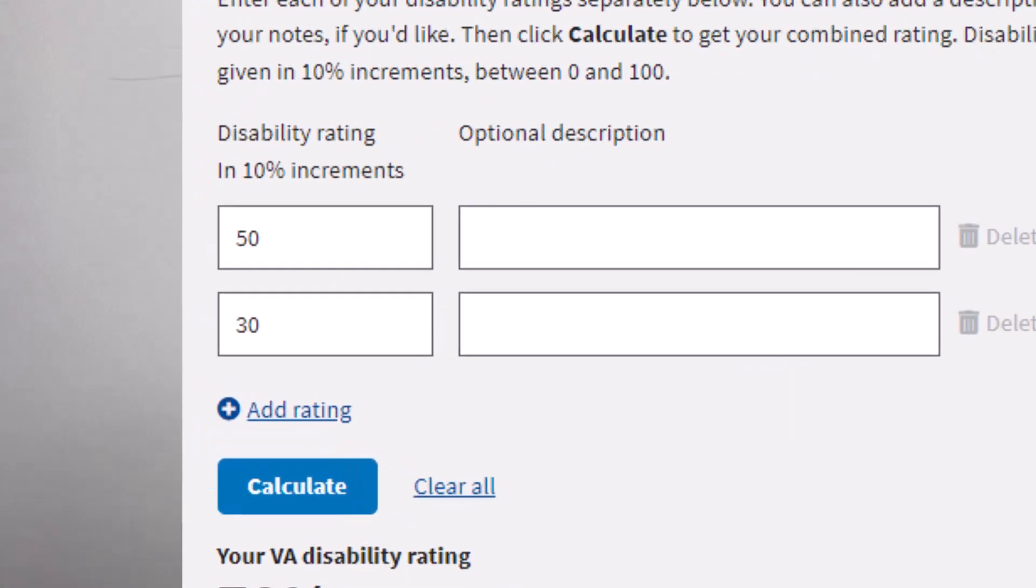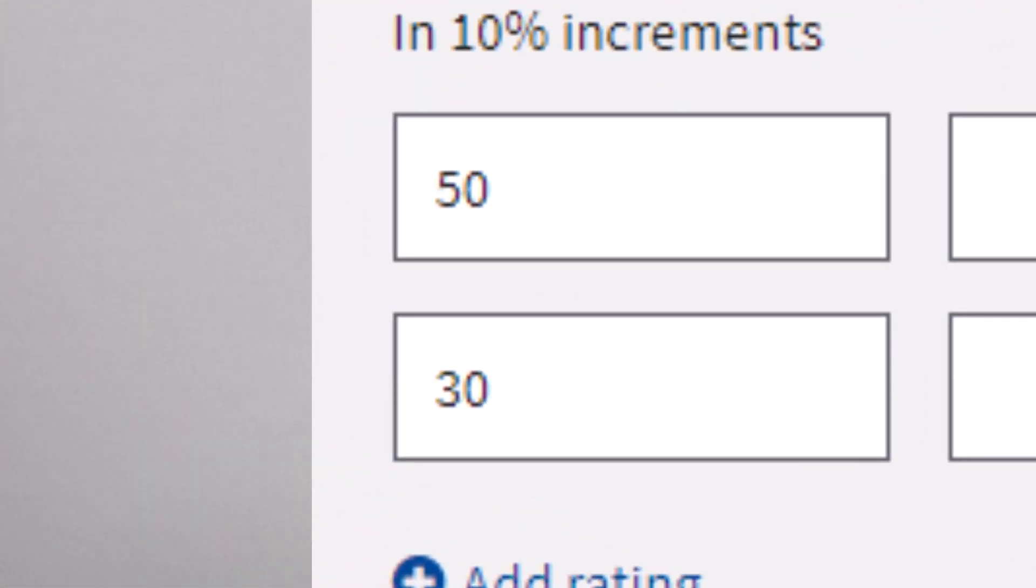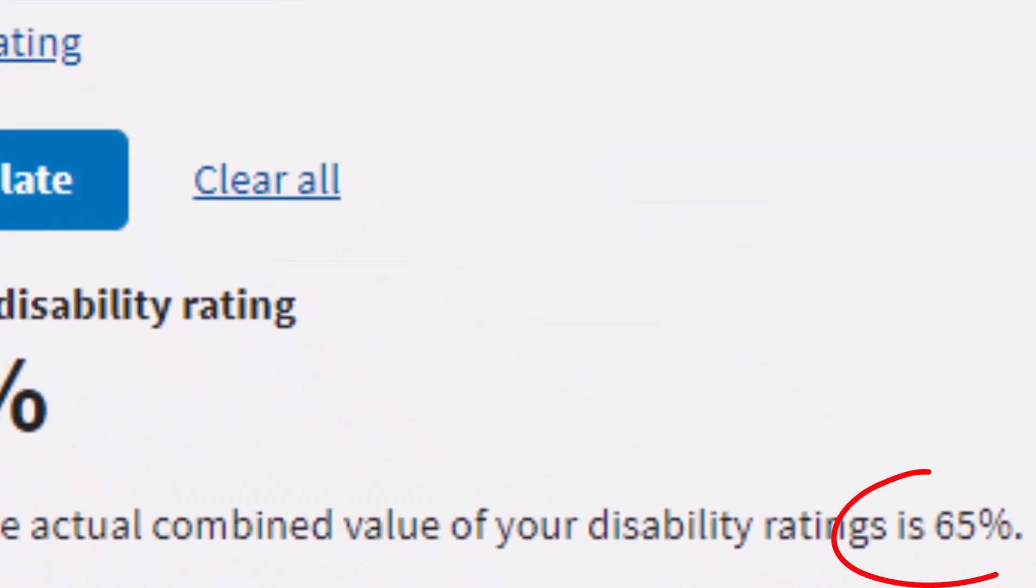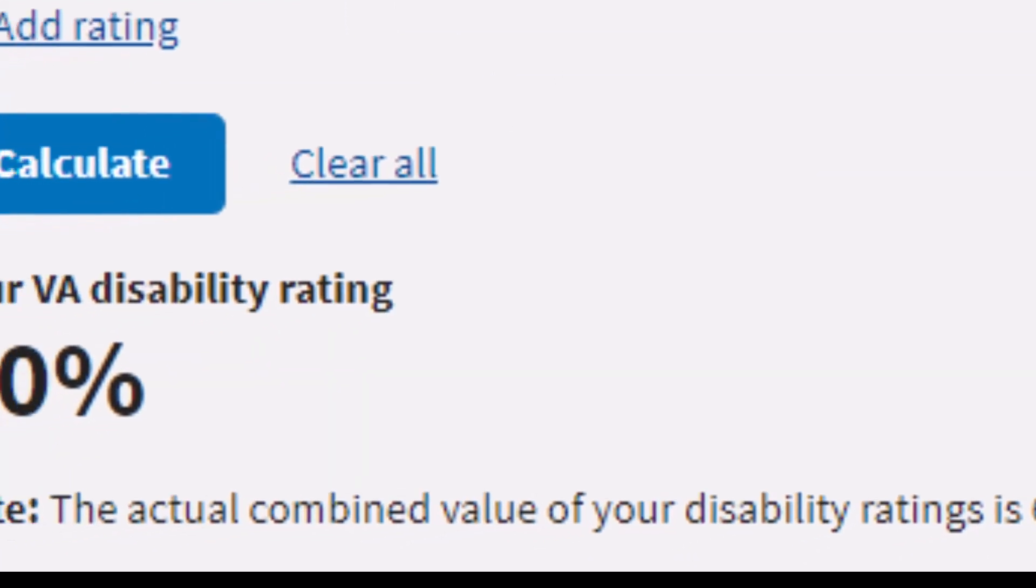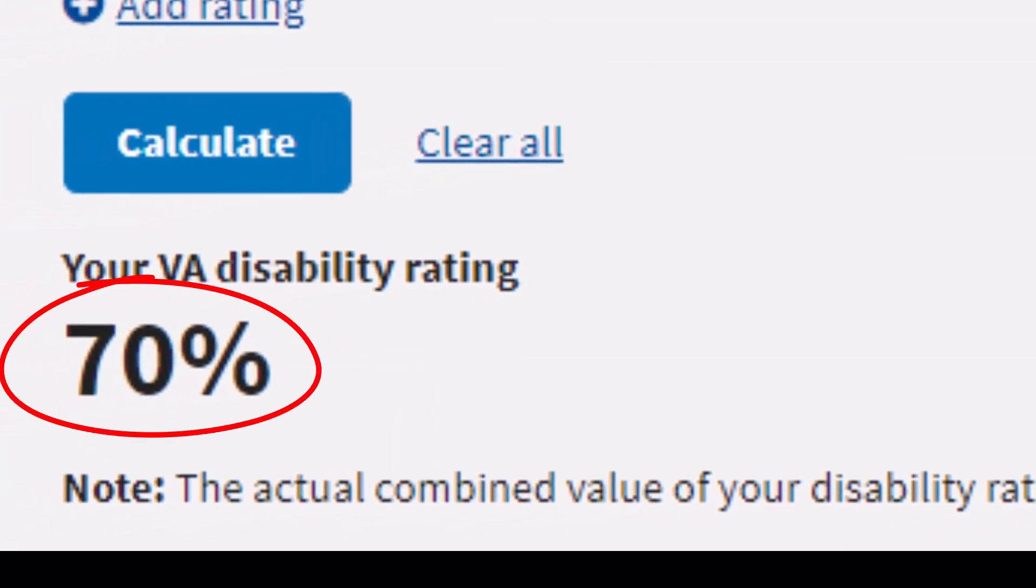All right, now let's check this out on the official VA calculator. You got 50, 30. The actual combined value is 65%. And you get a final rating of 70.